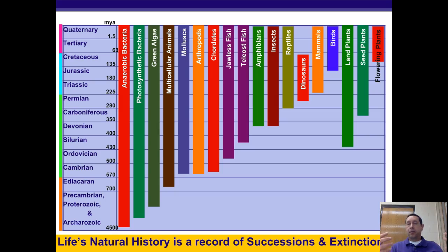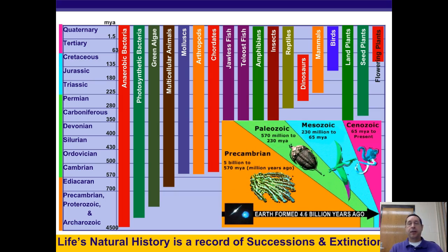The history of life, as we look at the fossil record, shows that the types of living things have changed throughout the history of life on Earth. There have been successions, there have been extinctions, and different things were more common in different parts of the history of life on Earth.